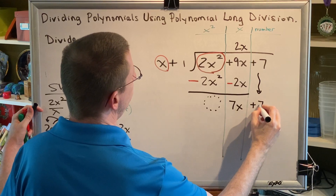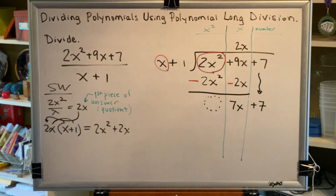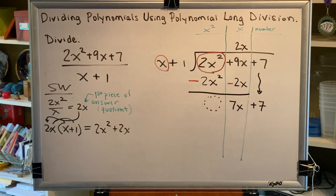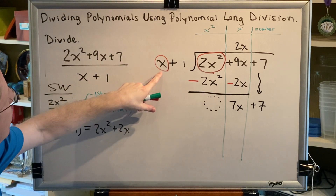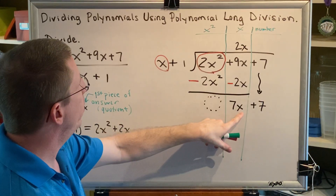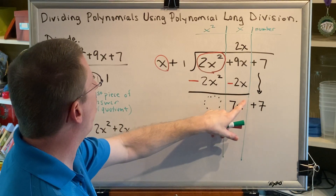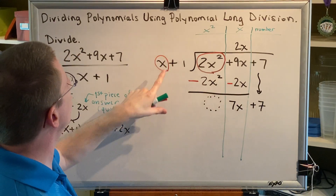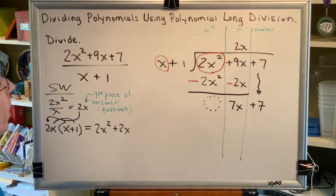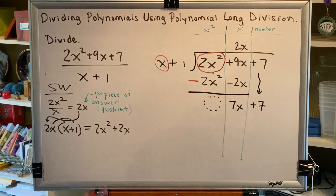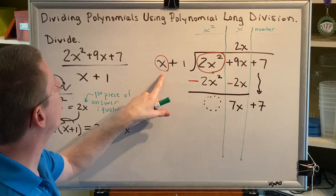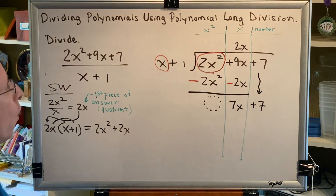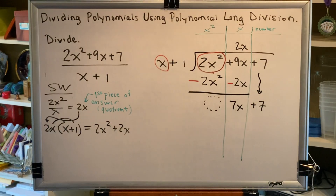The next step is to bring down all terms from the original numerator that have not been changed in any way — that would be this plus 7, so we bring that down. Now we look at the exponent on the lowest under versus the exponent on our denominator. The highest exponent on x here is 1, and the highest exponent on x in the denominator is also 1. So we need to keep going — we loop through the polynomial long division steps again, because the exponent in our lowest under must be less than the exponent of our denominator before we can stop.